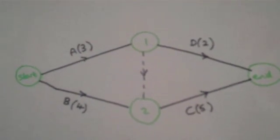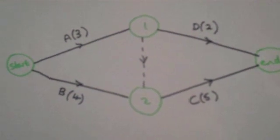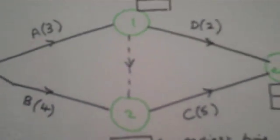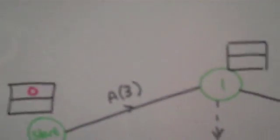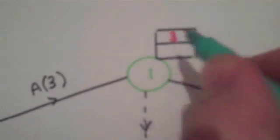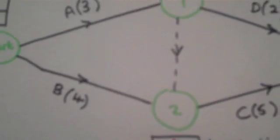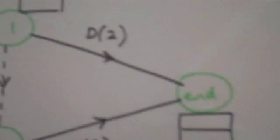Now we'll put in the hours each activity takes and use an algorithm to find the total project time. In the top box of each node, I put the earliest time I can leave that node. In the bottom box, I put the latest time. We start with a forward pass at time 0. Task A takes 3 hours, so I can't leave node 1 until time 3. Task B takes 4 hours, so I can't leave node 2 until time 4. Then 3 plus D's 2 hours is 5, and 4 plus C's 5 hours is 9. The project takes 9 hours.